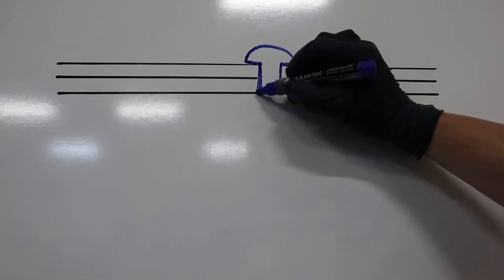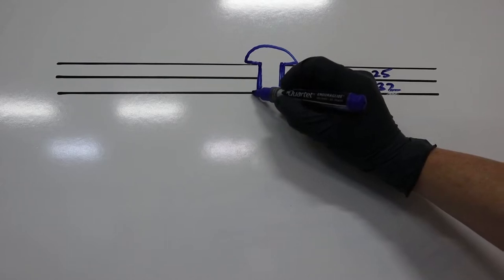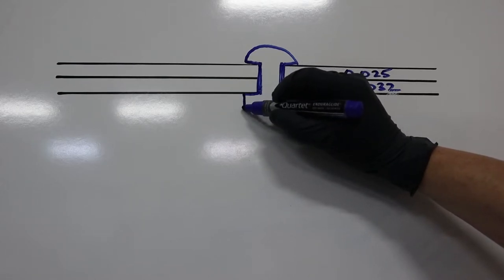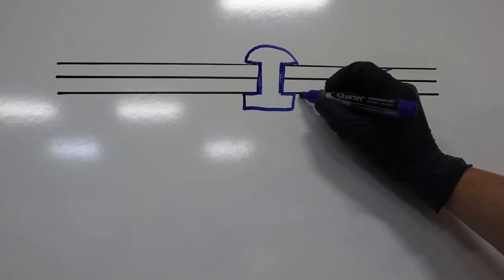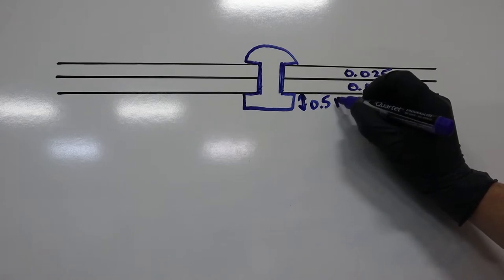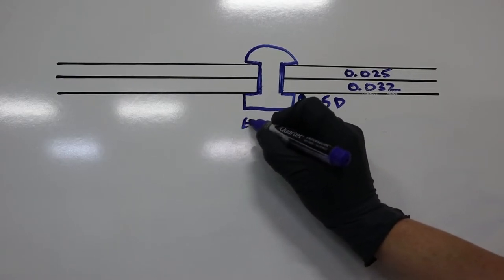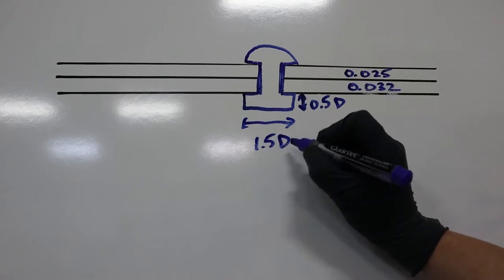So when you actually rivet it, it will mushroom out and fill that hole. And then it should look something like this. There are tools to measure this, but just to get an idea of what it kind of ends up is a half a diameter of height and 1.5 diameter of width. And like you saw in the last video, there's a tool to measure this.